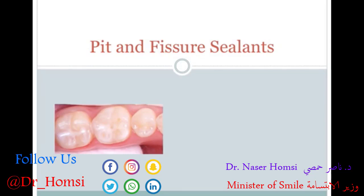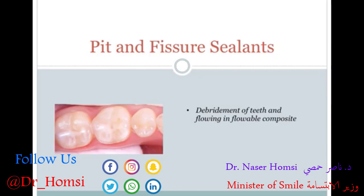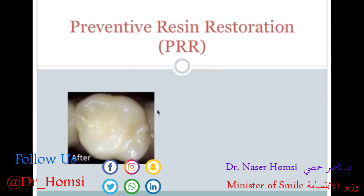Pit and fissure sealants are also a very conservative approach and very commonly performed. Since these are hard areas to clean, instead of removing enamel you can opt to etch and flow a sealant material to smooth out these pits and fissures. A pit is basically the failure of a fossa to coalesce, whereas fissures are the failure of grooves to coalesce during tooth formation.